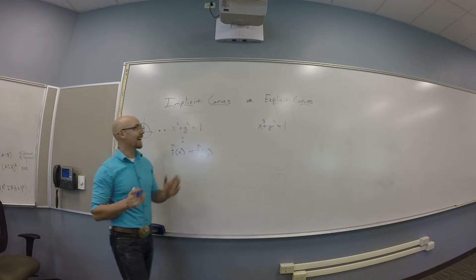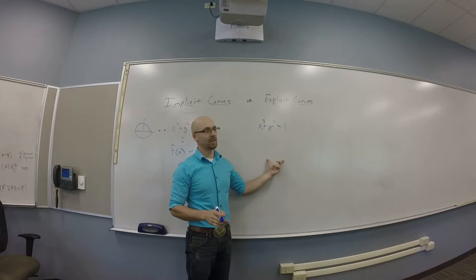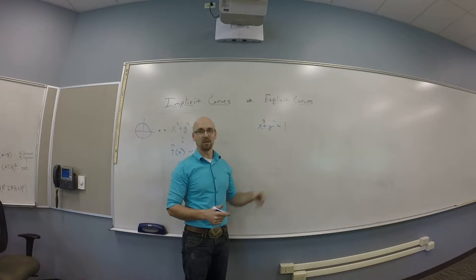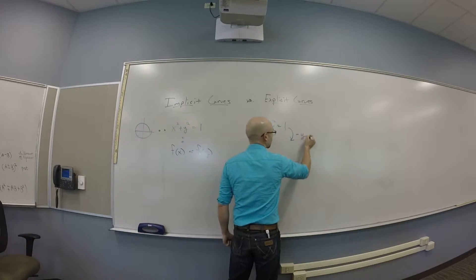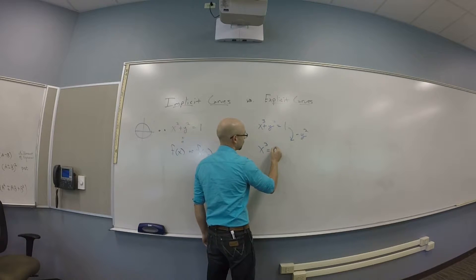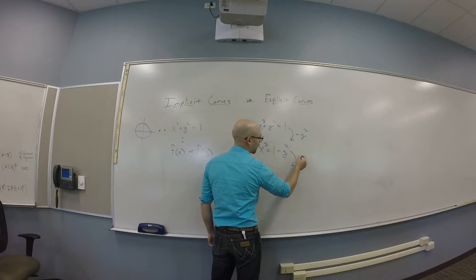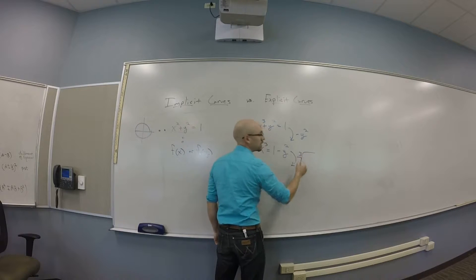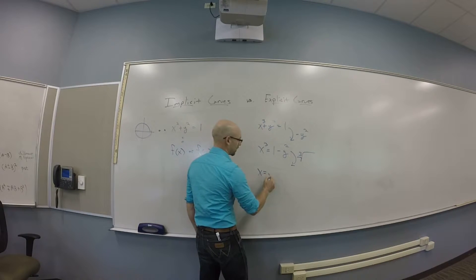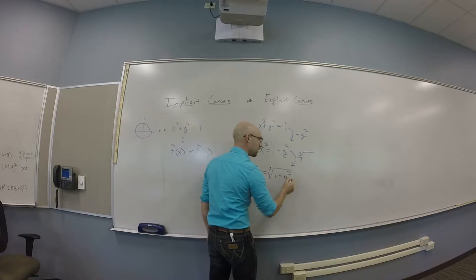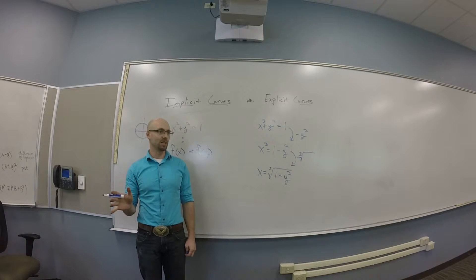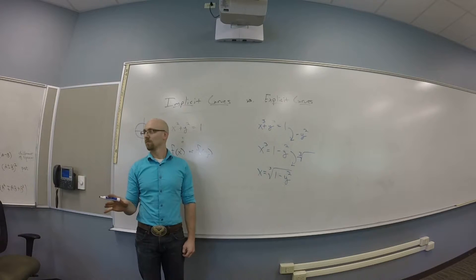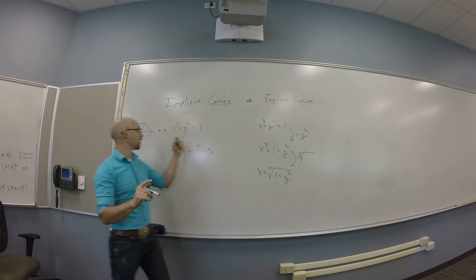But I can actually solve for x here. How would I solve for x here? We subtract y squared from both sides, so we get x cubed is 1 minus y squared. And then we'd apply the cube root function to both sides. So I get x is the cube root of 1 minus y squared, which is the only one.